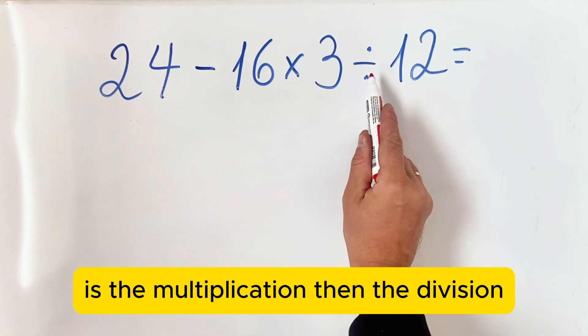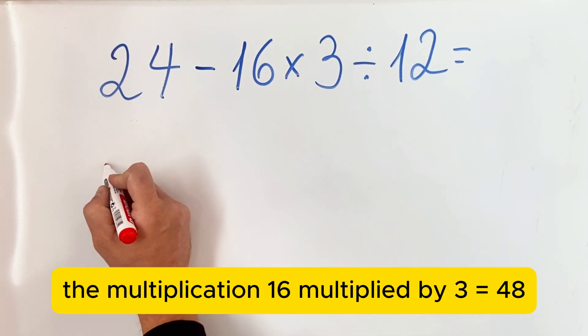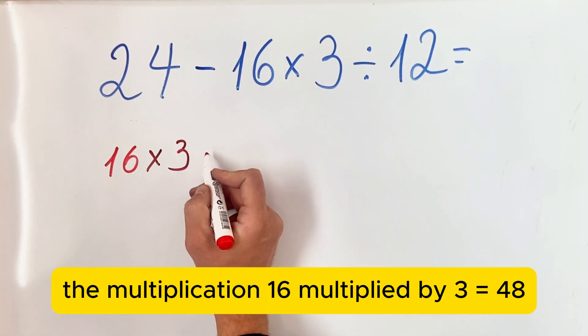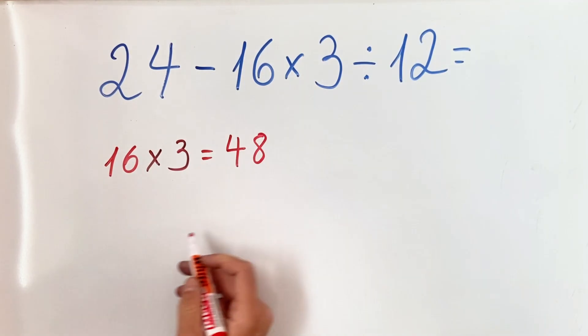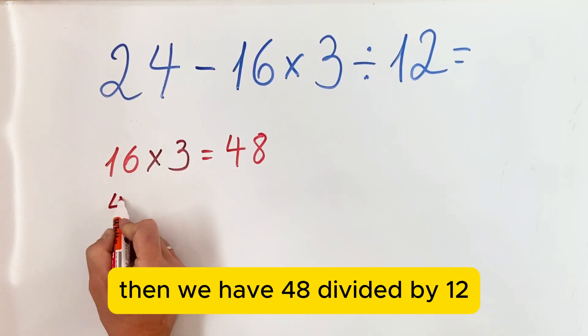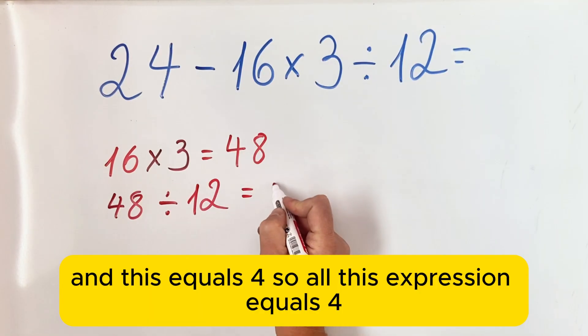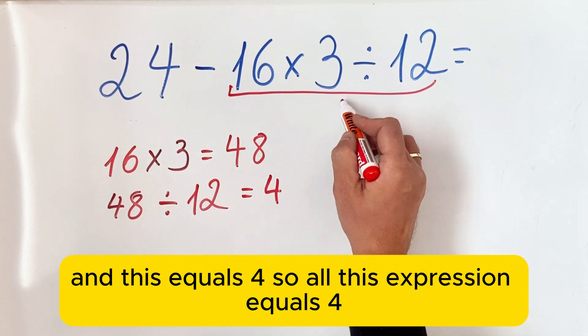So we do the multiplication: 16 multiplied by 3 equals 48. Then we have 48 divided by 12, and this equals 4. So all this expression equals 4.